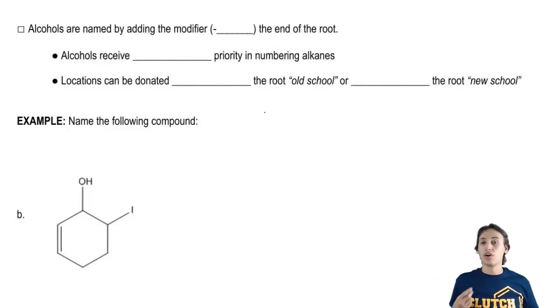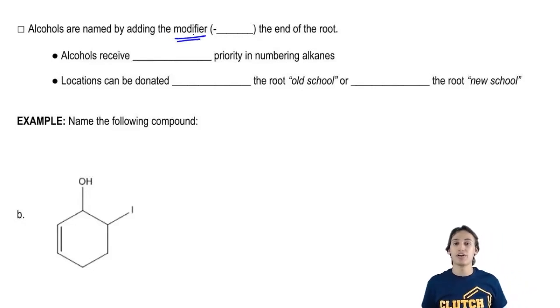Similar to double bonds and triple bonds, alcohols are also going to get a modifier. But that modifier is going to be, instead of en or yn, it's going to be ol.